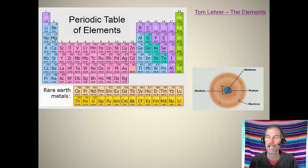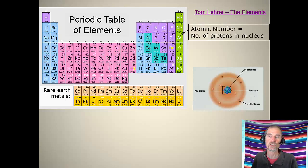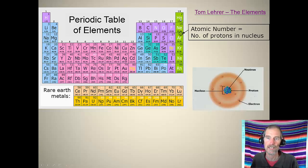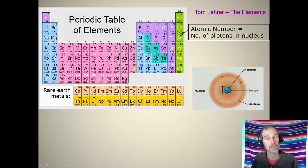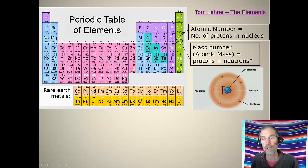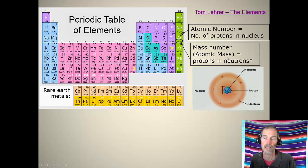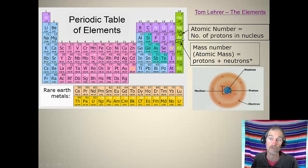Just to remind you: on the periodic table, there are some numbers. The big number in the top right is the number of protons — it's called the atomic number. The smaller number below is called the atomic mass, which is the number of protons plus the number of neutrons. The atomic number is always smaller than the atomic mass, and it's the most important one.